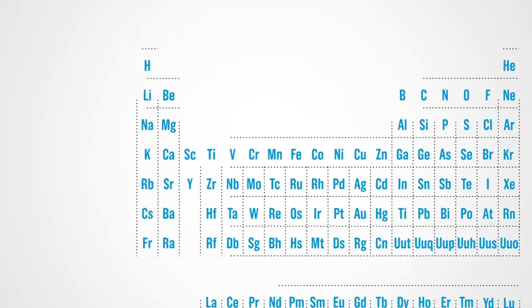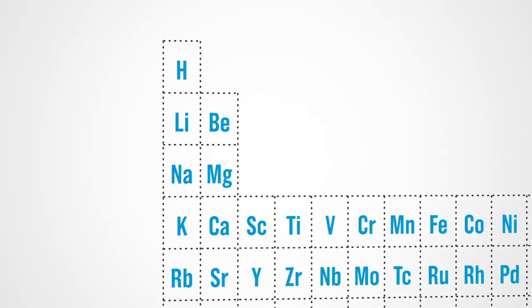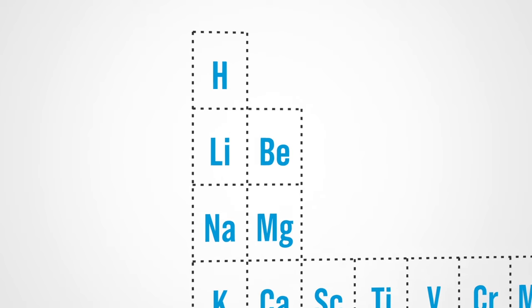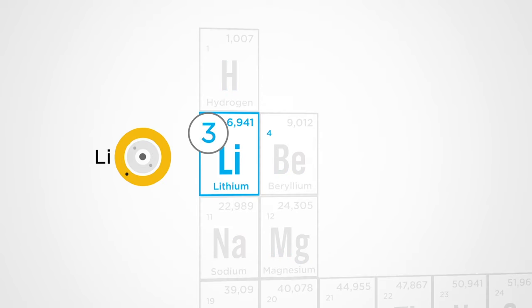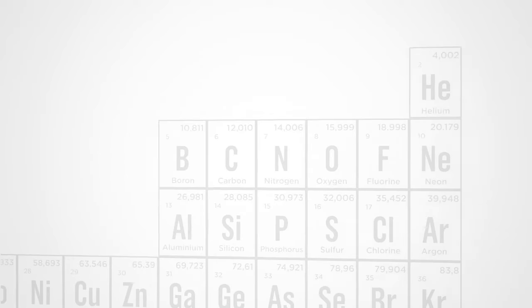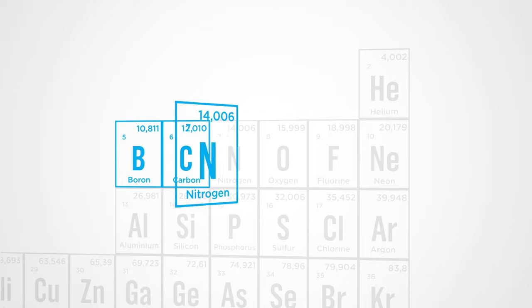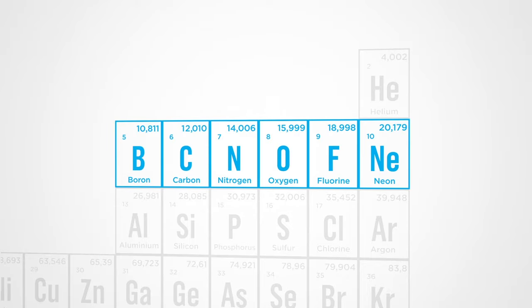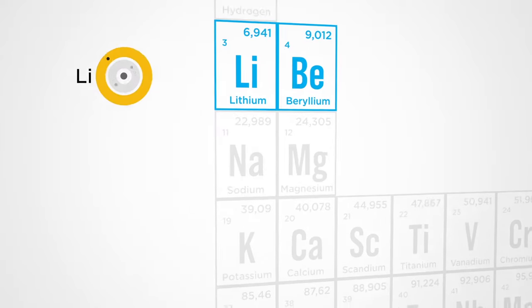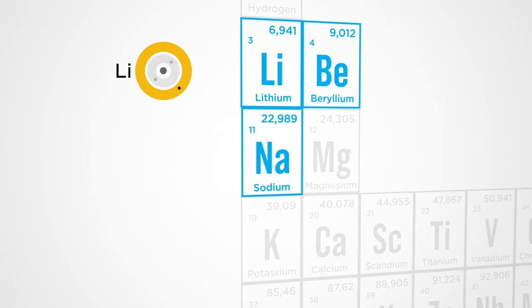We call it periodic because in this table the elements become similar again periodically. Let's see: if we start at 3 lithium, the properties will vary regularly along the line until 10 neon. Here the last layer of electrons gets full and we move on to the next line and back to the first column. The properties of this element, 11 sodium, are again identical to the element that is directly above it, and so on.